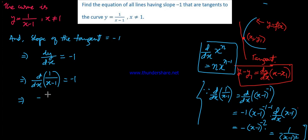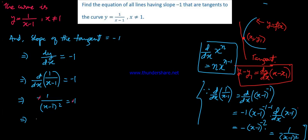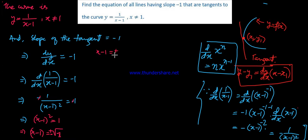Setting minus 1 over (x minus 1) squared equal to minus 1, and cross-multiplying, we get (x minus 1) squared equals 1. Taking the square root gives x minus 1 equals plus or minus 1.